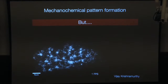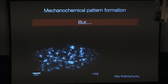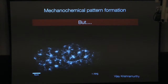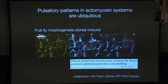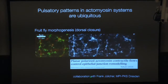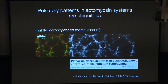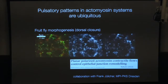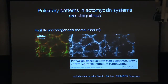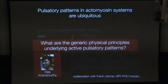This pattern is pulsatory — this movie shows one frame per second, and you see these patches come and go. Vijay started thinking about this when he joined my group and Frank Jülicher's group in Dresden. The motivation is that these pulsatory myosin foci are ubiquitous in early development — they are seen, for example, in the fruit fly as well. What are the principles by which such pulsatory patterns can be created?